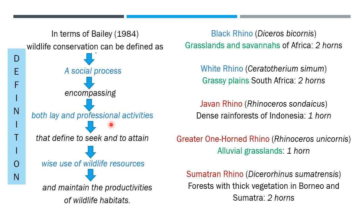There are five species of rhinos throughout the world: the black rhino (Diceros bicornis), white rhino (Ceratotherium simum), Javan rhino (Rhinoceros sondaicus), Great Indian one-horned rhino (Rhinoceros unicornis), and Sumatran rhino (Dicerorhinus sumatrensis). The first two are African species. The lower three — Javan, Great one-horned, and Sumatran rhinos — are Asian species. Both African species have two horns; two Asian species have one horn, while the Sumatran rhino has two horns.